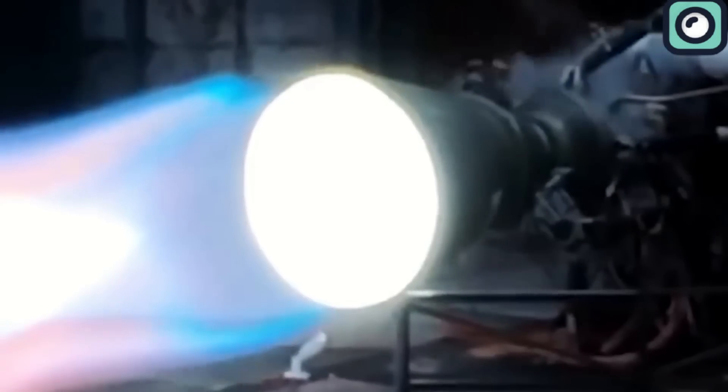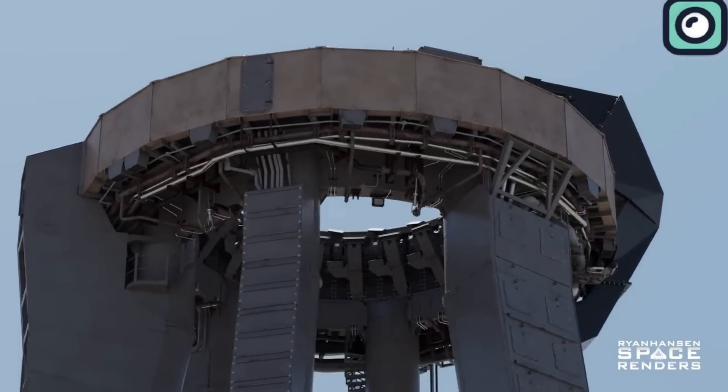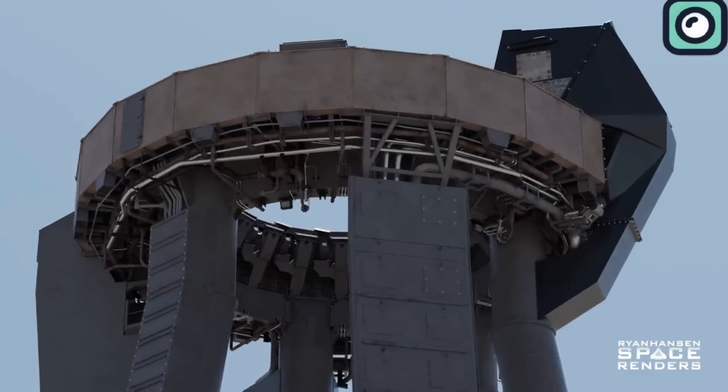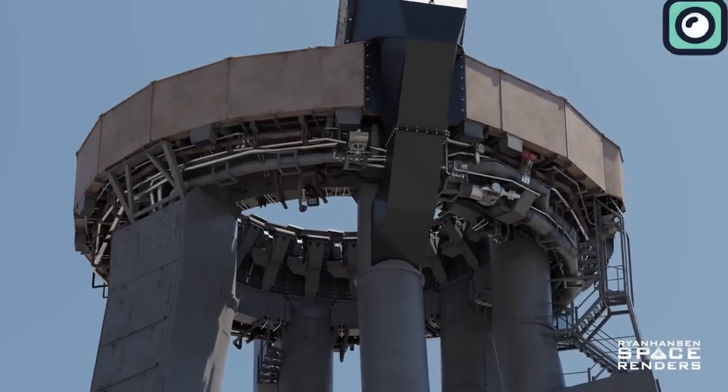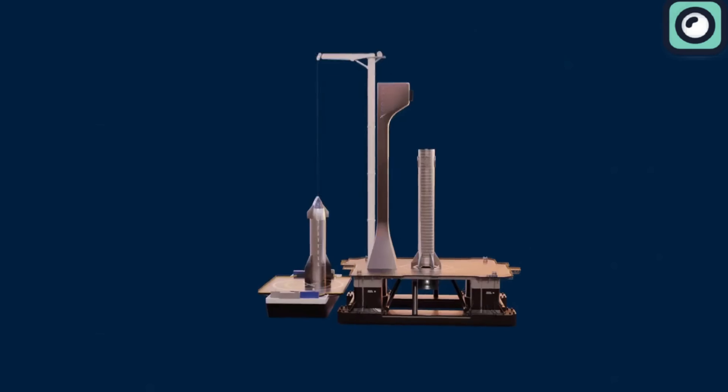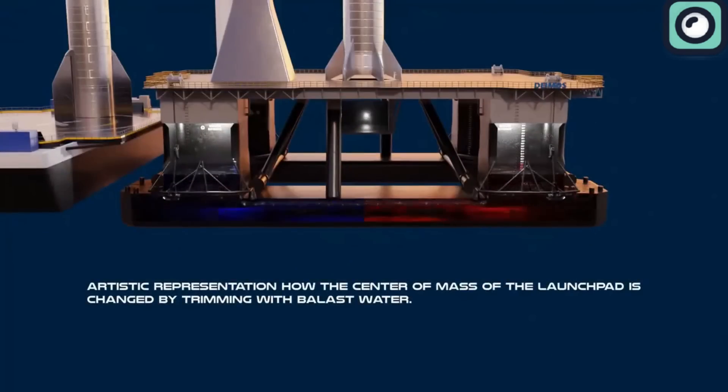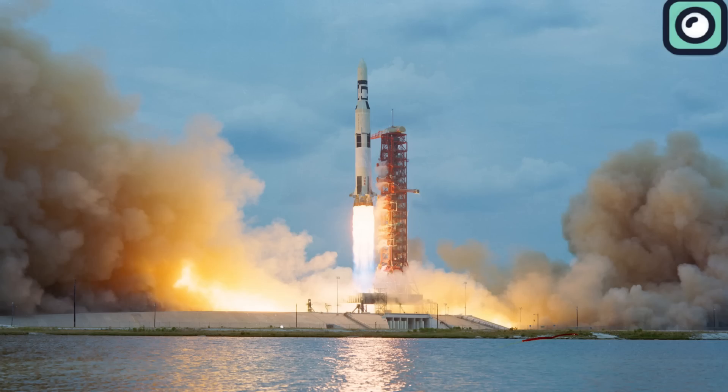This is why SpaceX has decided to construct an additional launch pad, designed to handle the higher output of the upgraded Raptor engines. Musk noted that the new pad would handle up to 10,000 tons of thrust, almost three times the power of NASA's Saturn V rocket, the most powerful rocket of its time.